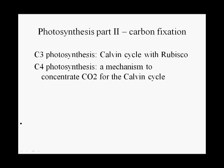We will talk initially about C3 photosynthesis and about the Calvin cycle with a key enzyme called Rubisco. I hope you get to remember that name — Rubisco — because we owe so much to that enzyme. I figure every literate person should know what Rubisco is.